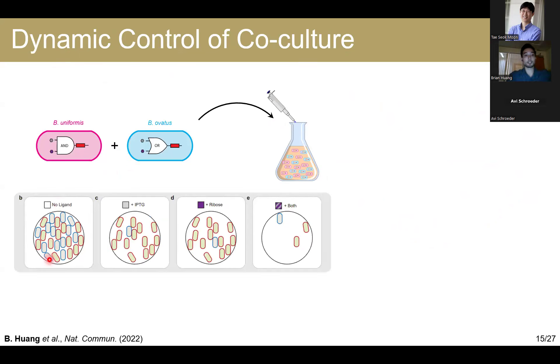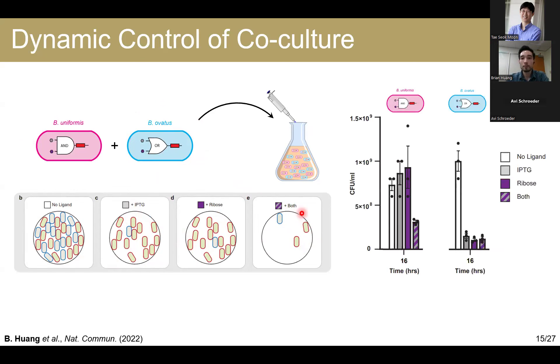We performed this co-culture competition experiment. At the end of our timeframe, 16 hours, we can see for our AND gate strain, just as expected, we see only a fitness loss with both ligands. For our blue strain with the OR gate, as expected again, in the presence of either ligand, we see a significant fitness deficit, showing that we can achieve dynamic regulation of our community in this synthetic co-culture system.